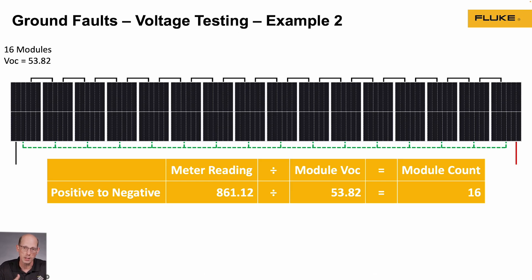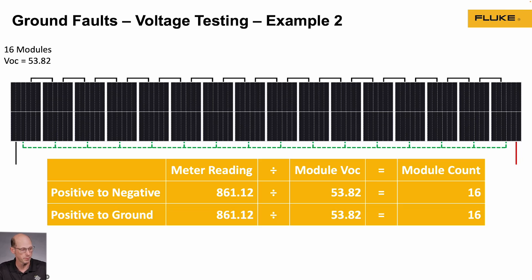In a second example, I measured from positive to negative and got the same result — 16 modules worth of voltage, which is what I expected. When I measured from positive to ground, I also got 861 volts where it should be zero, indicating 16 modules.